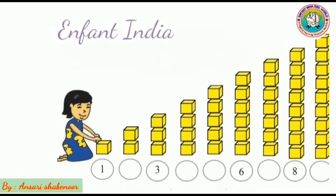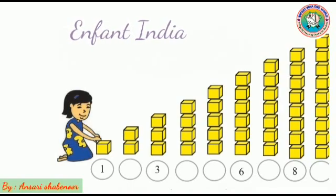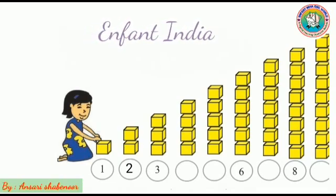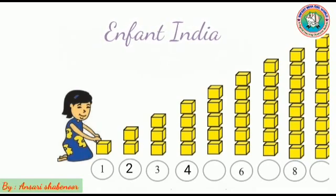We will count. First 1, one already written down here. Then 1, 2. Then 1, 2, so we will write here 2. 1, 2, 3, three is already written here. 1, 2, 3, 4, we will write here number 4.